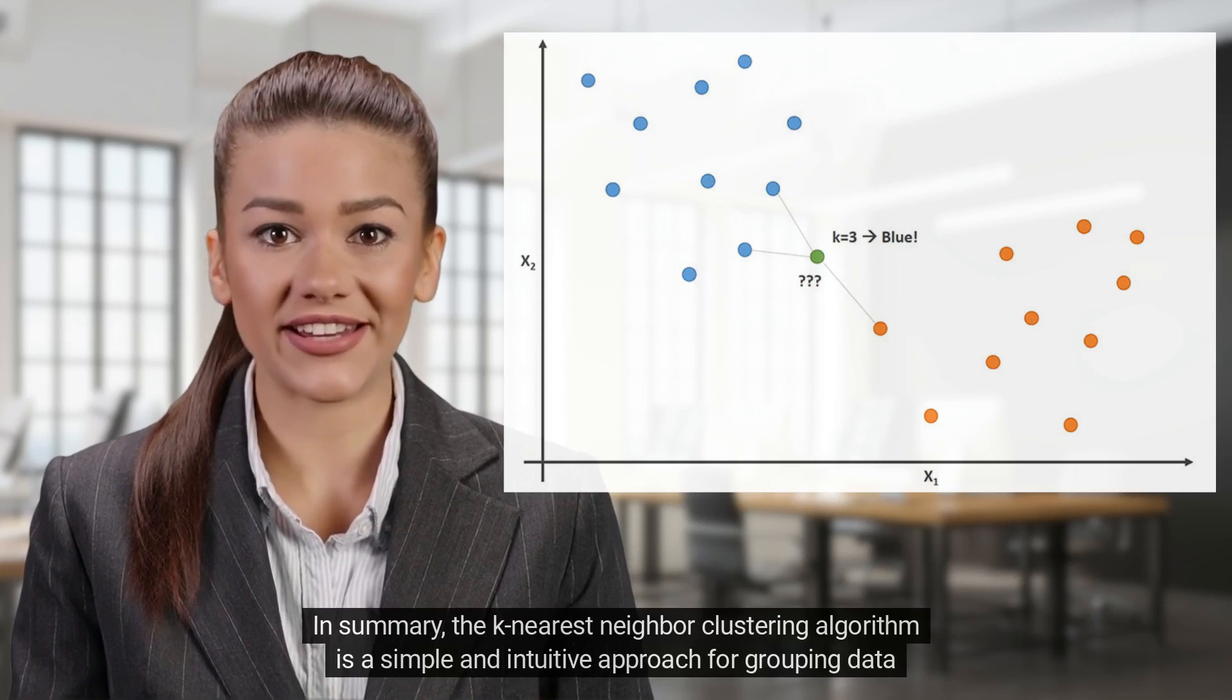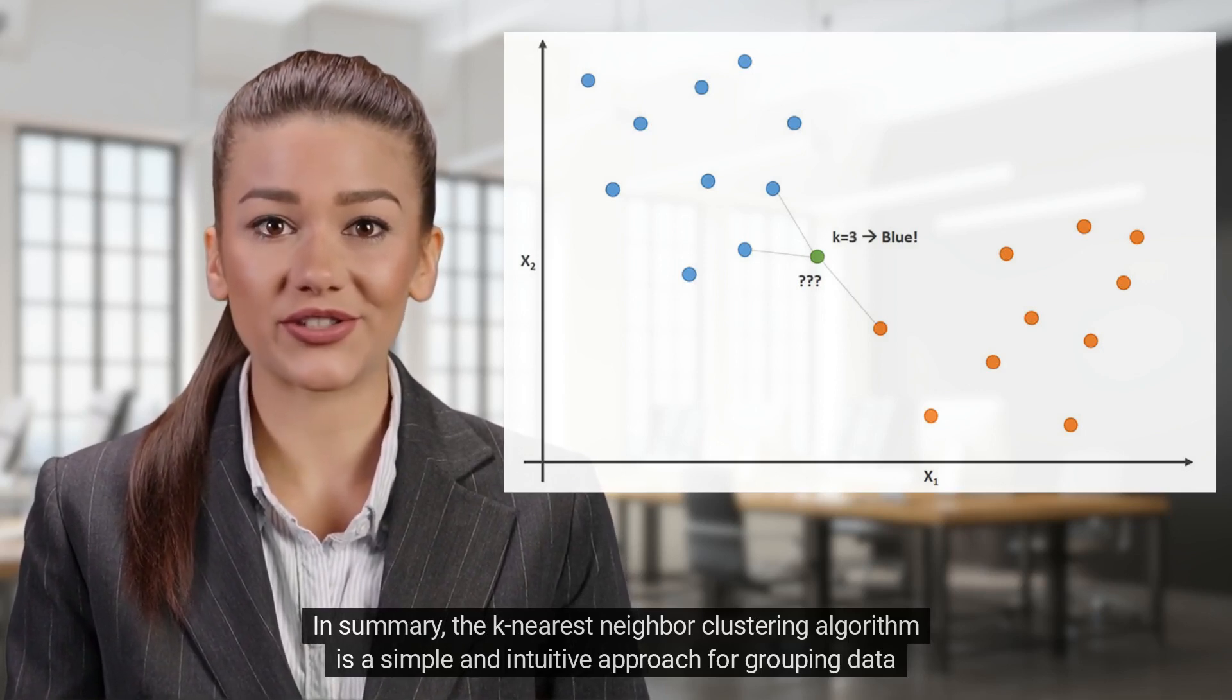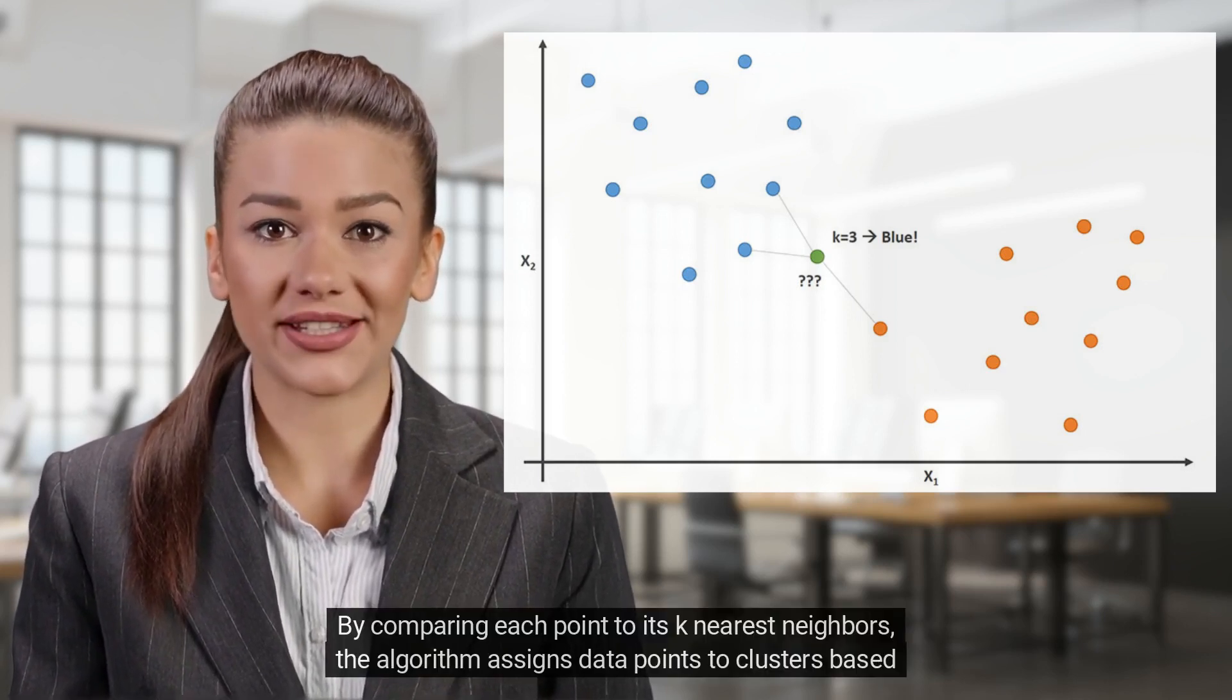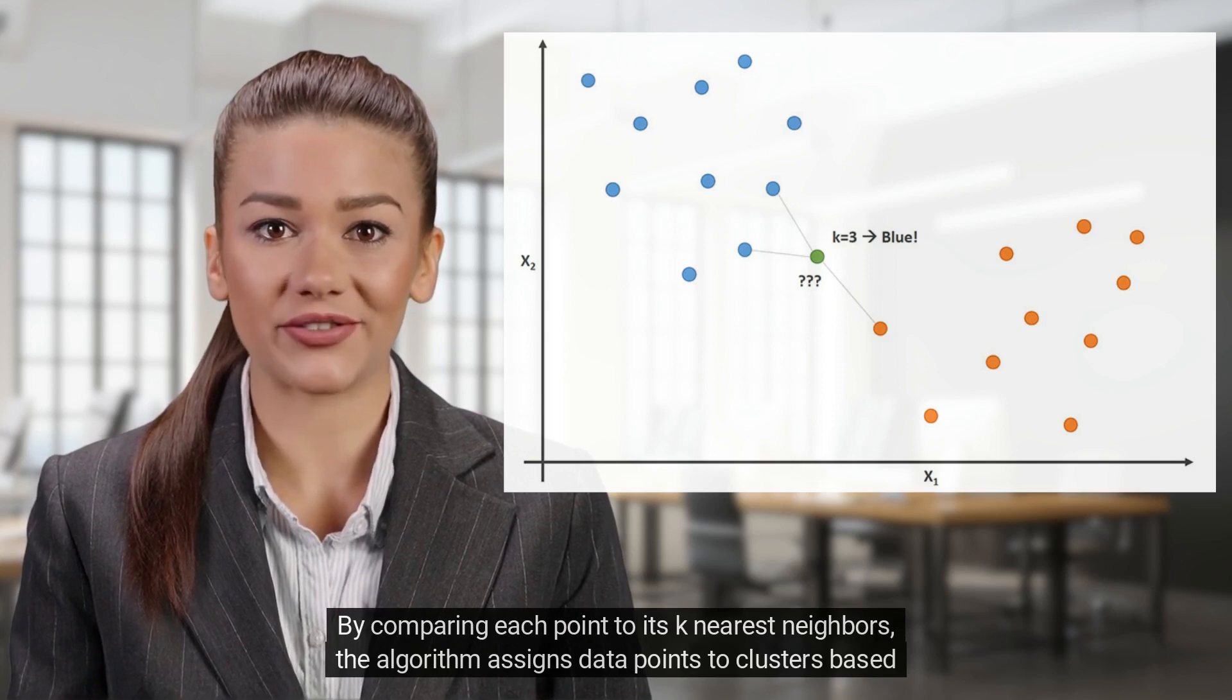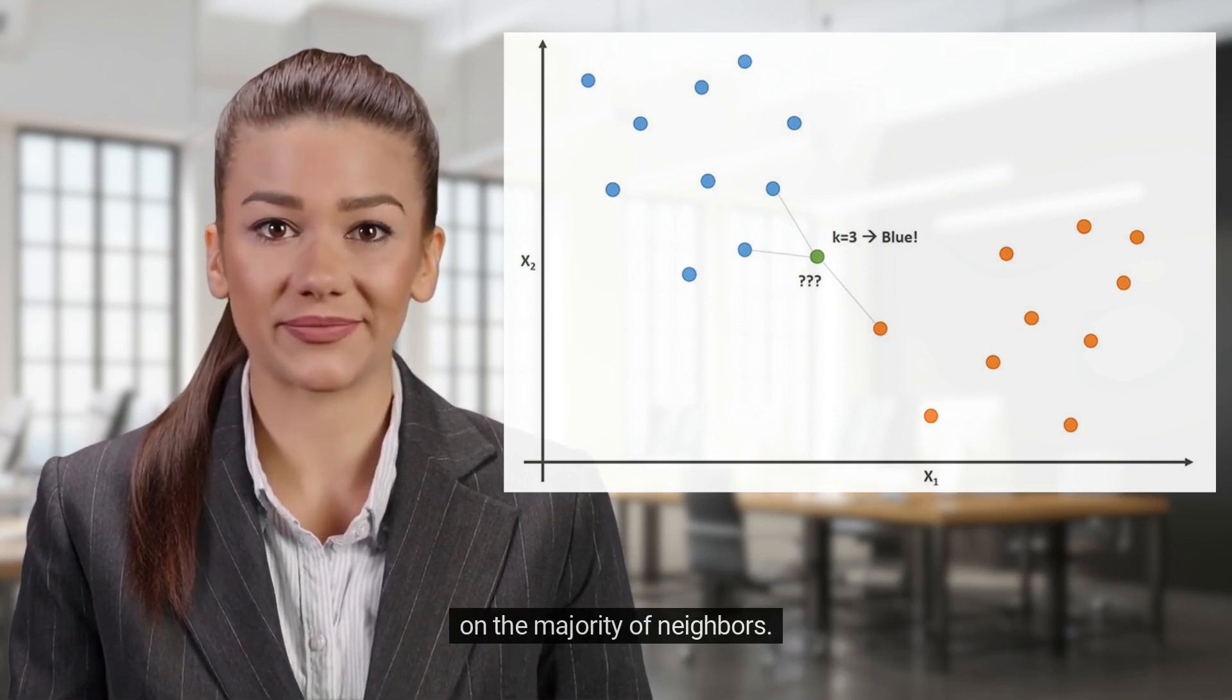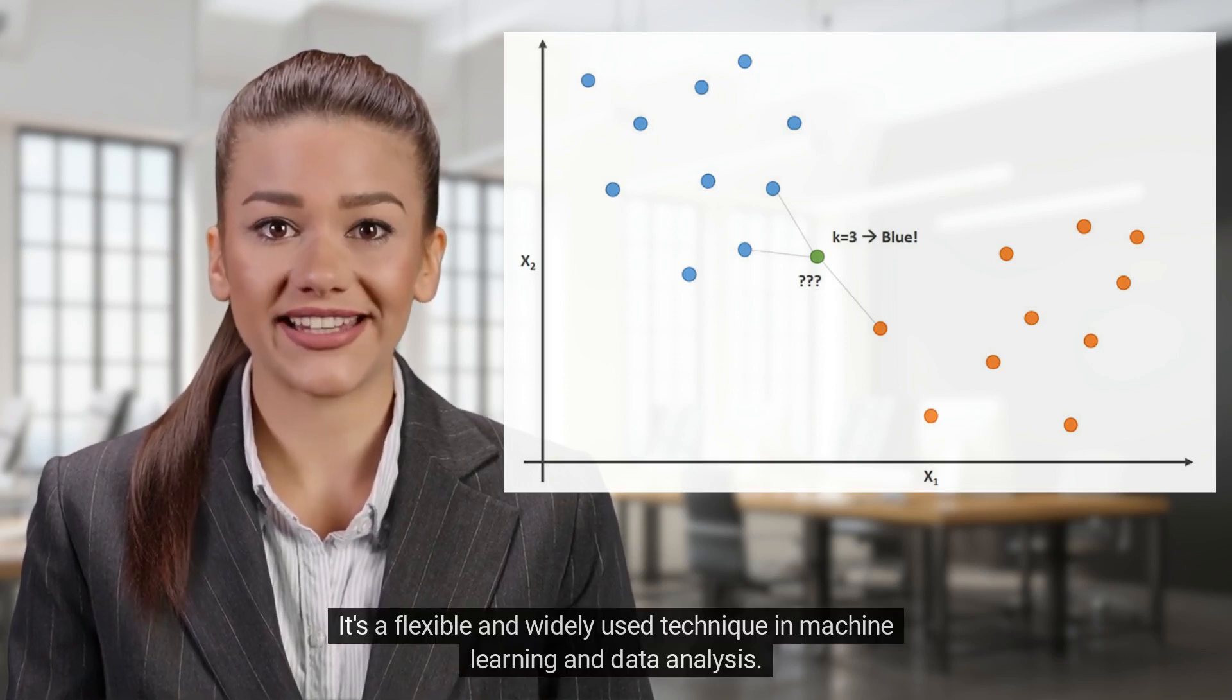In summary, the K-nearest neighbor clustering algorithm is a simple and intuitive approach for grouping data points based on their similarity. By comparing each point to its K-nearest neighbors, the algorithm assigns data points to clusters based on the majority of neighbors. It's a flexible and widely used technique in machine learning and data analysis.